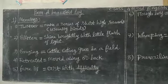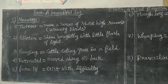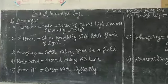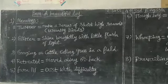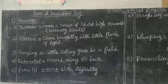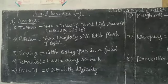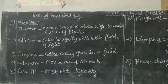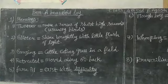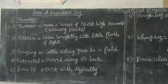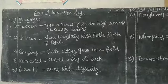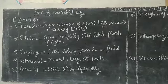First, write the heading. Put the date. In the English classwork, write the heading: 'Poem: A Beautiful Day.' Next, on a new line, write the first main heading: 'Meanings.' These are the meanings I have given you, which are already there in the reader, but I am writing on the board so that you can understand.